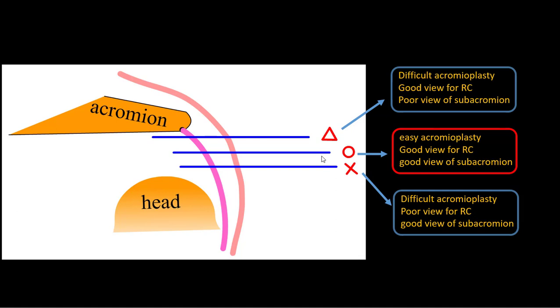If your goal for the portal is acromioplasty plus viewing the rotator cuff, then you should make a portal at this level. But the third one is bad.